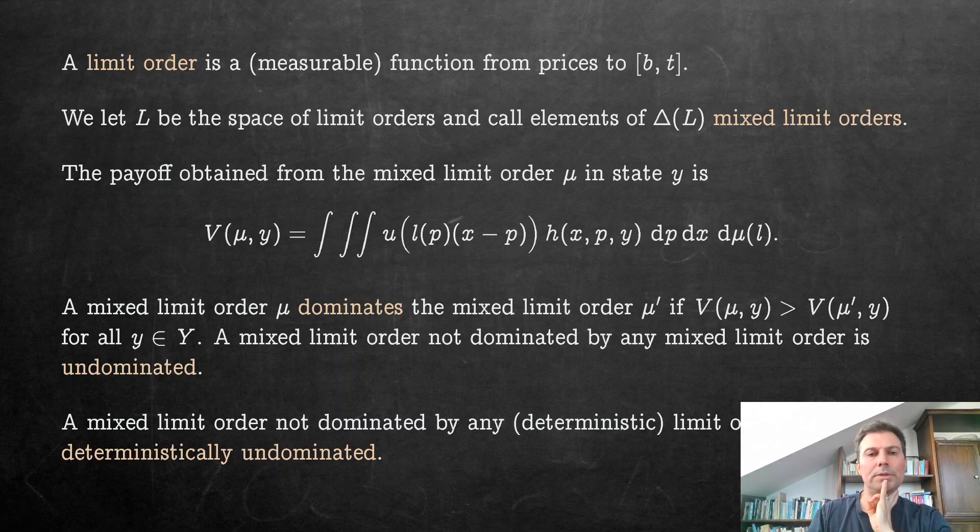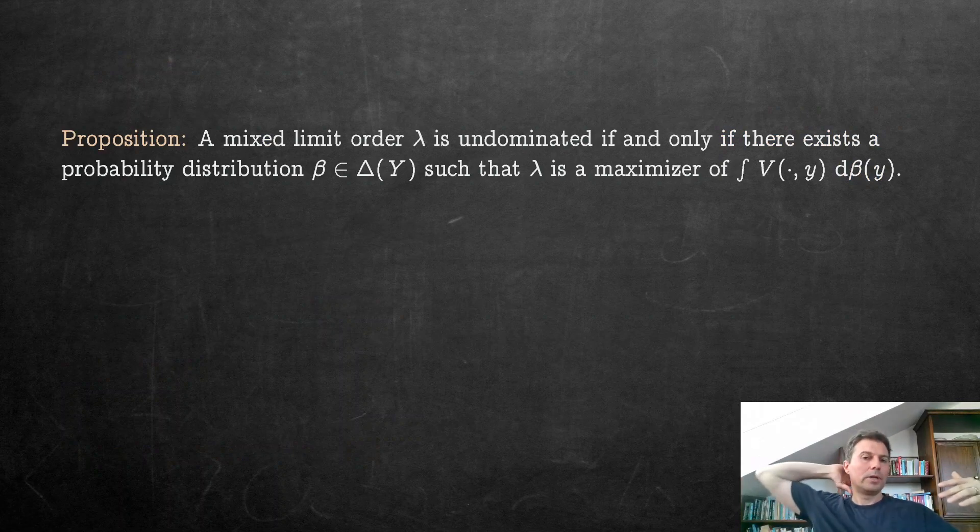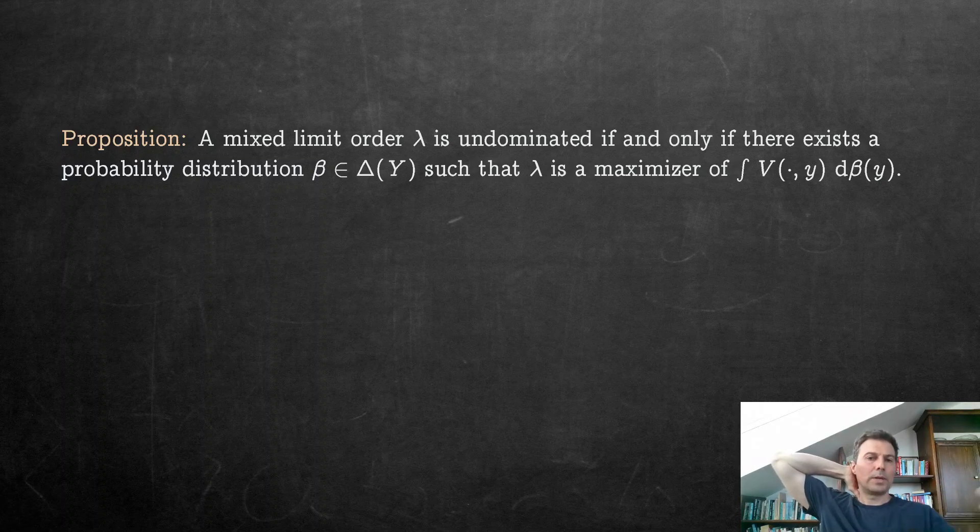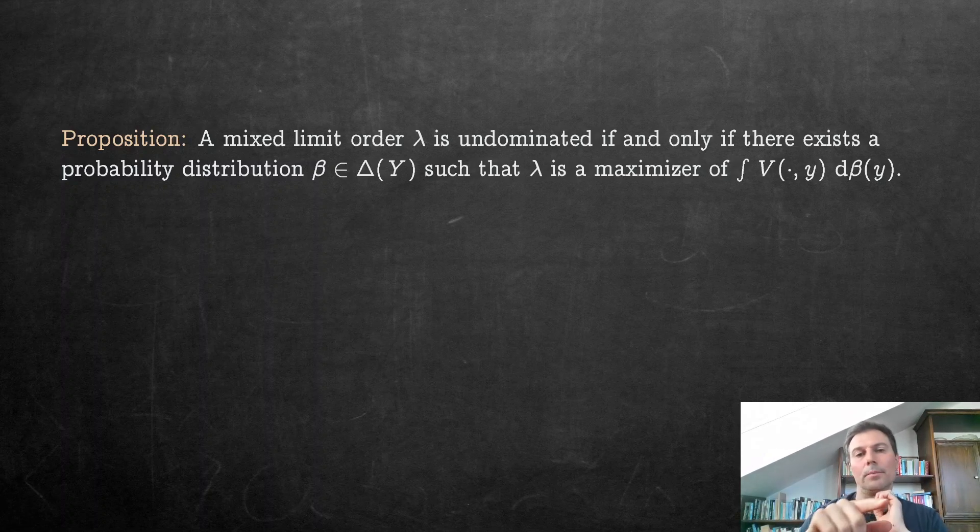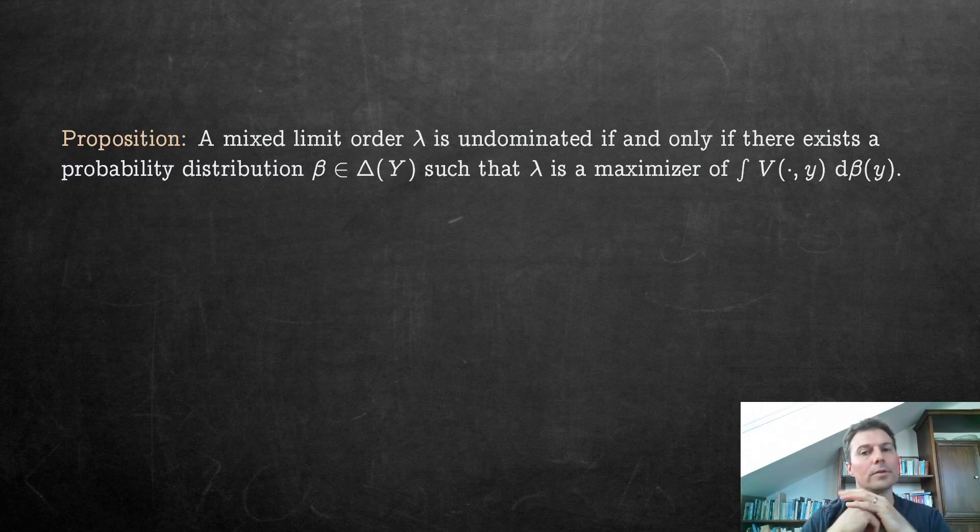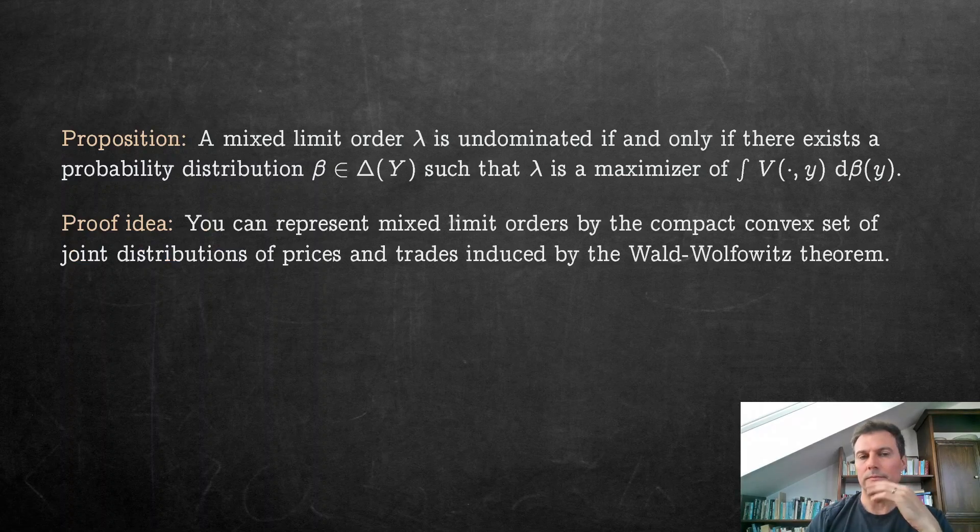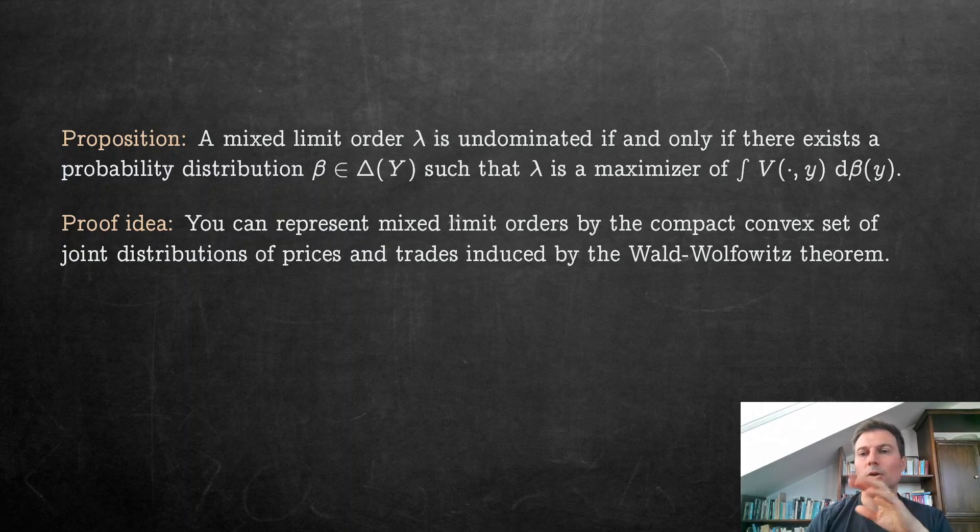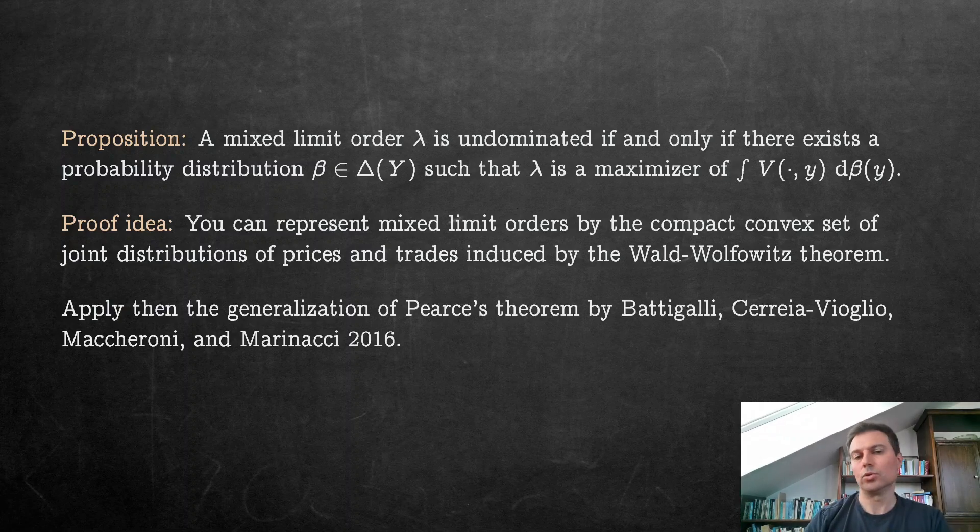So now we have two steps we need. First is we need this Wald complete class theorem here again. We need a version of Pearce's lemma again, which basically we get, which is that a mixed limit order λ is undominated if and only if there exists a probability distribution β over the space of all models that we have states such that λ maximizes subjective expected utility, and that can be shown again in our setup as well. We do this by basically representing mixed limit orders by the compact convex set of joint distributions of prices and trades induced by the Wald-Wolfowitz theorem, and then we use a generalization of Pearce's theorem by Battigalli, Cerreia-Vioglio, Maccheroni and Marinacci in 2016. But that's just establishing that it's also true in our case that we have this Pearce's lemma basically.